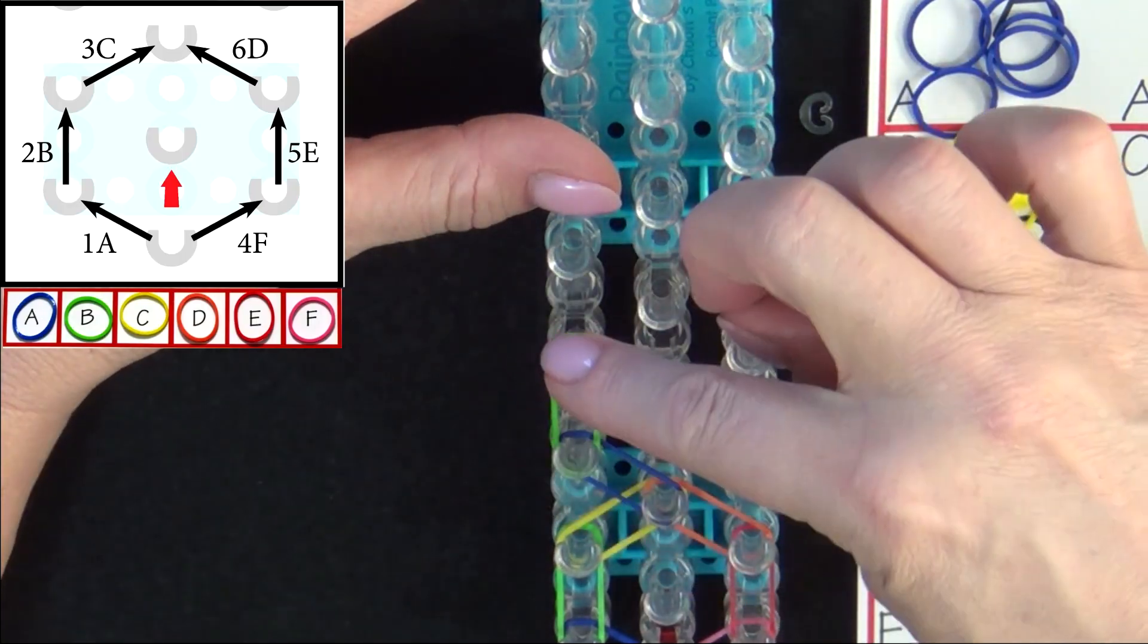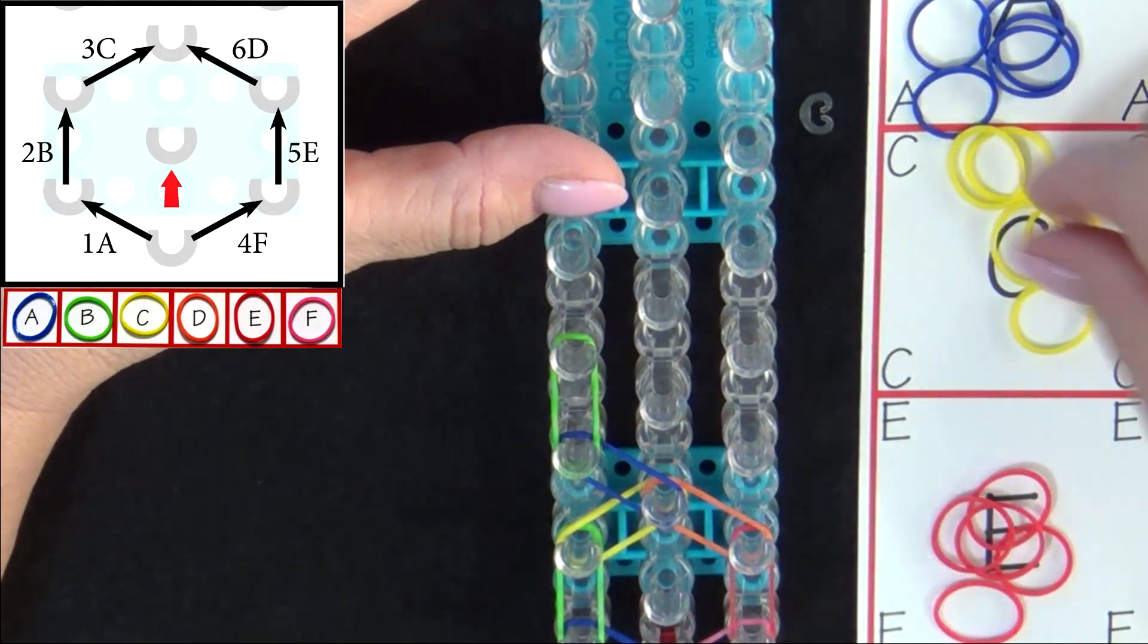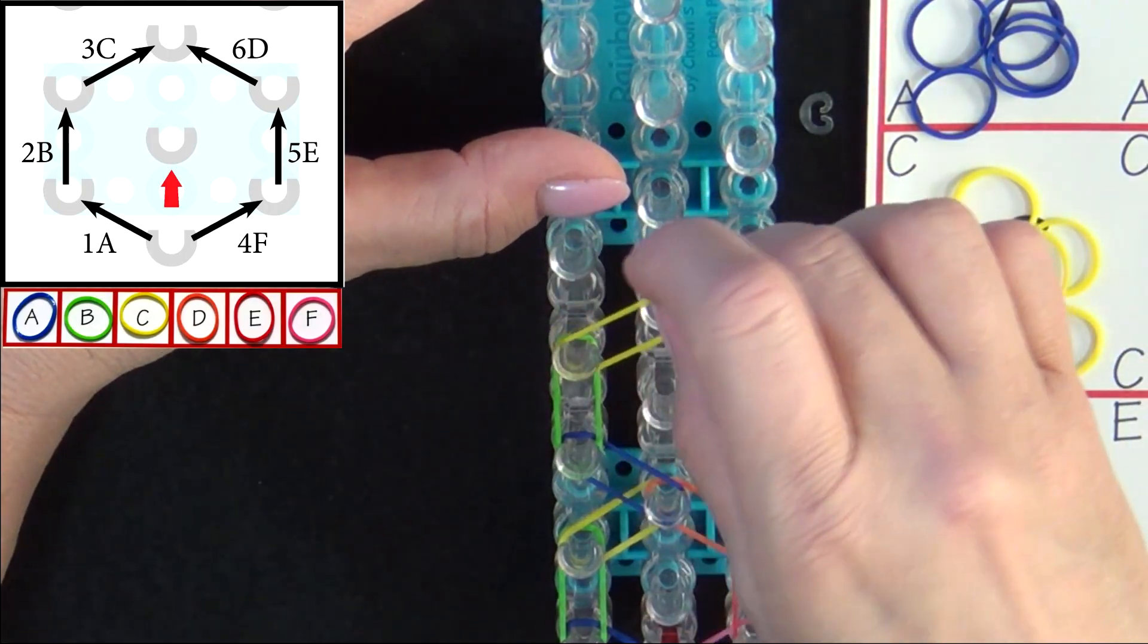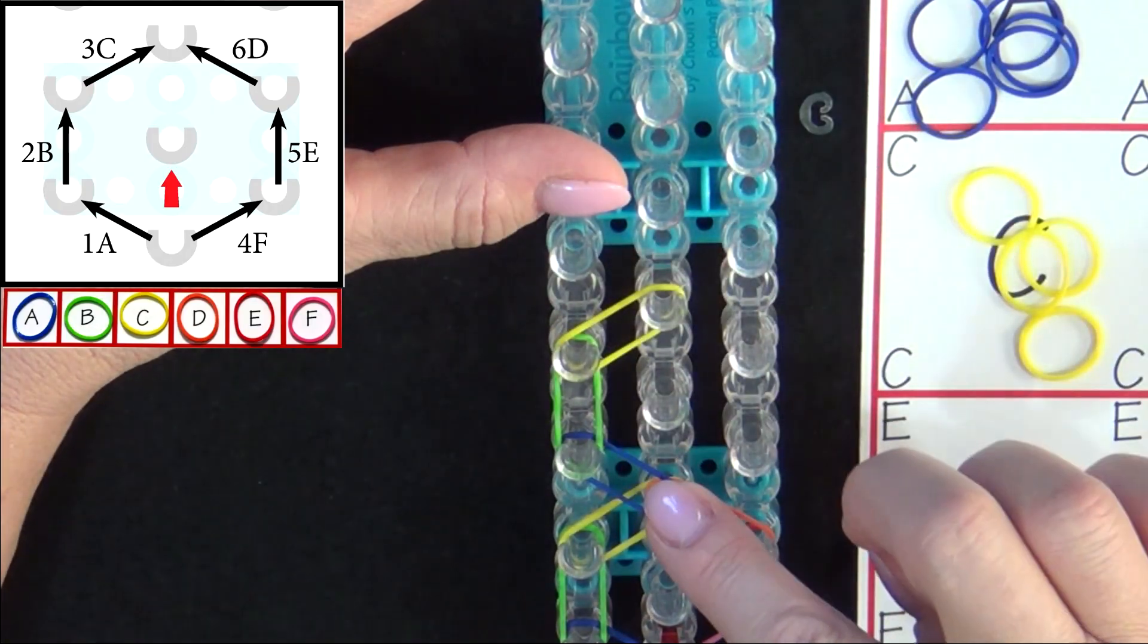And place one A. 2B, go up the side, and 3C will turn into the center.